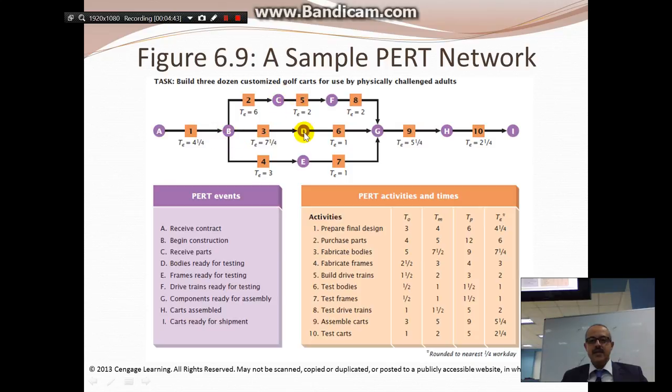So these are events A, B, C, D, E, F, G, H, I. When we reach I, it means carts are ready for shipping. Here in A, we receive the contract. When we reach point G, all the components are ready for assembling - we have received all the parts. In point nine, we actually assemble the carts. Once we reach H, the carts are ready. Did you guys get to understand those steps and activities, events and tasks?